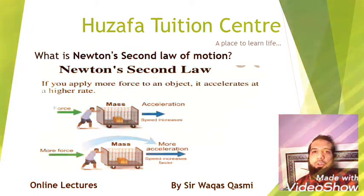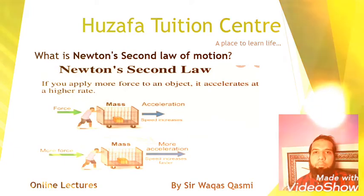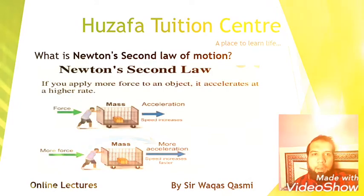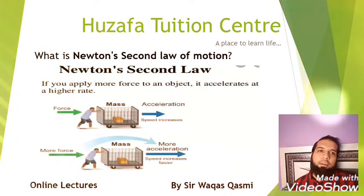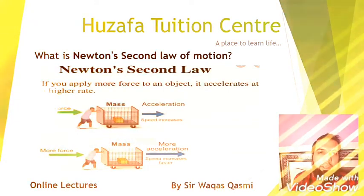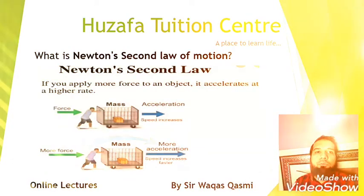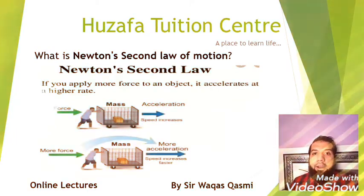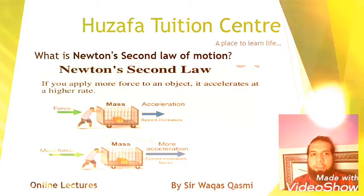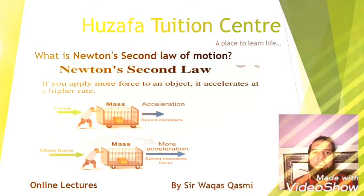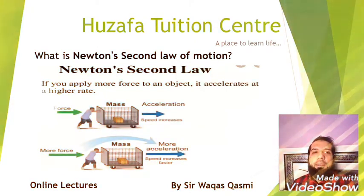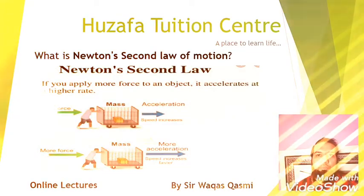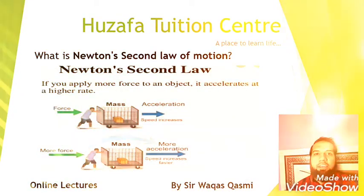But to understand this properly, we need to understand two or three things. First, the relation between force and mass: if mass is bigger, then more force will be required. This relationship is called directly proportional — if mass is bigger, more force is needed. And the relationship between acceleration and mass is indirectly proportional.